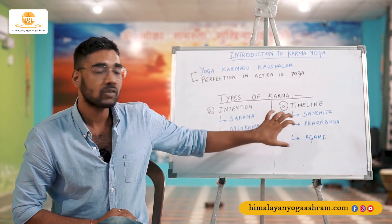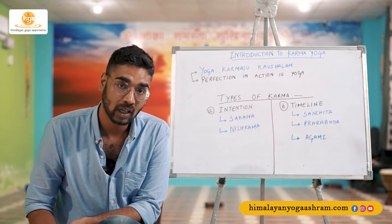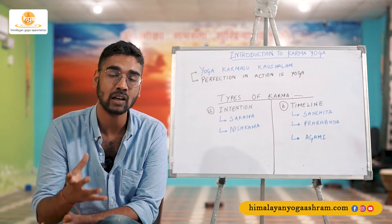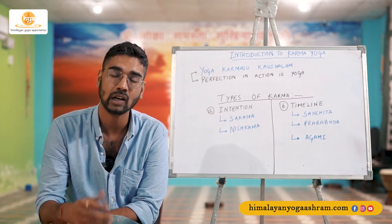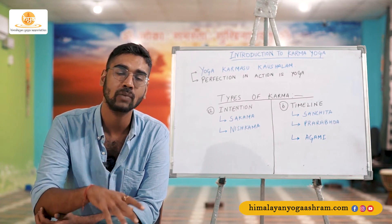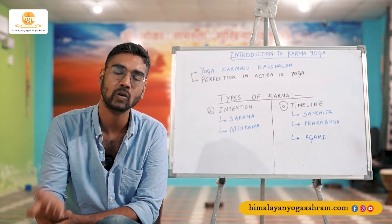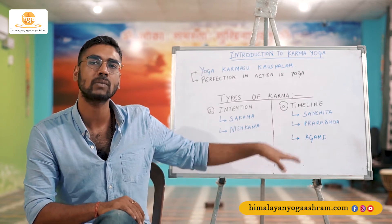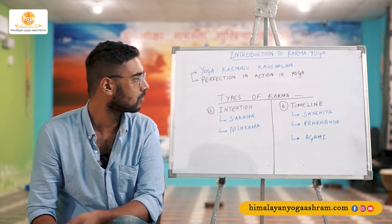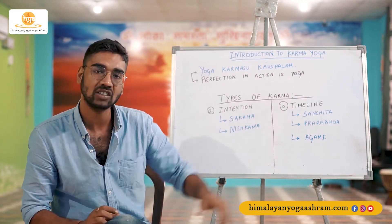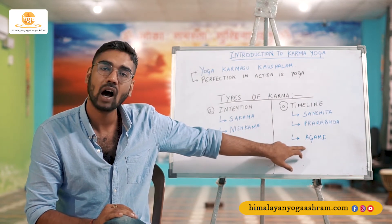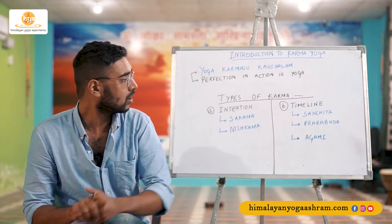The other type of karma is timeline-based, which is also the generic understanding of what karma is. The statement 'you reap what you sow' — you receive what you gave — is based upon the principles of the timeline. The three types of karmas based on timeline are Sanchita karma, Prarabdha karma, and Agami karma.